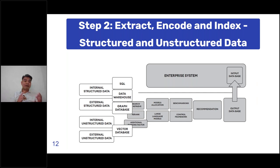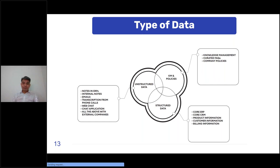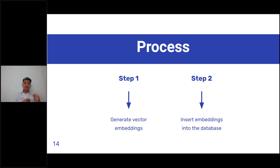In terms of the types of unstructured data you have, these include your knowledge management system, frequently asked questions, company policy, internal notes, employee emails, transcriptions, descriptions, and product information. For structured data, you have customer information, product information, and billing information. You really want to make sure that you have the right vector embeddings so that you can make use of information retrieval with your unstructured data as we move to the next step.